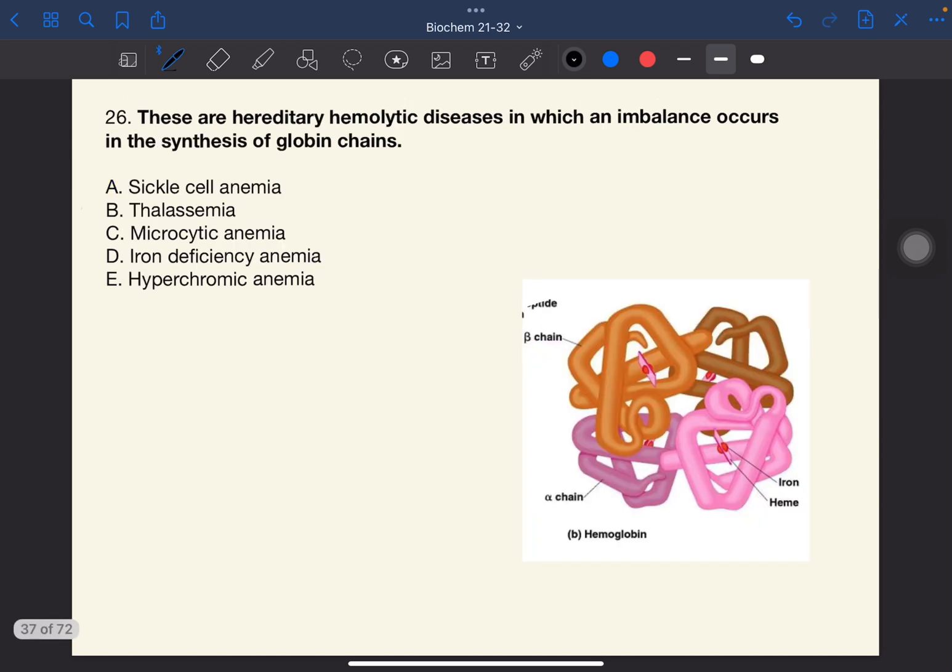Number 26. These are hereditary hemolytic diseases in which an imbalance occurs in the synthesis of globin chains. The answer to this one is B, thalassemias. If we recall, hemoglobin has 4 subunit chains, two alpha chains and two beta chains.